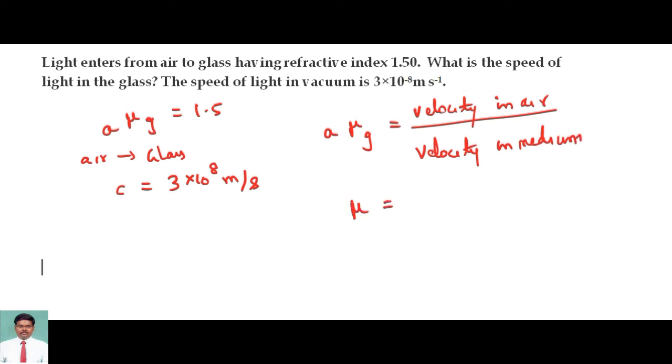You can write it as mu is equal to c by v. The velocity of light in air is c, it is a constant. We know that 3 into 10 to the power 8 meter per second, and velocity in medium I have to calculate.